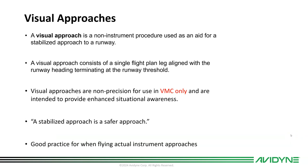A visual approach is a non-instrument approach used as an aid for a stabilized approach to a runway when flying VFR. It consists of a single flight plan leg aligned with the runway heading, terminating at a runway threshold. Visual approaches are non-precision and for use in VMC only, and are intended to provide enhanced situational awareness and a stabilized approach — which is a safer approach.